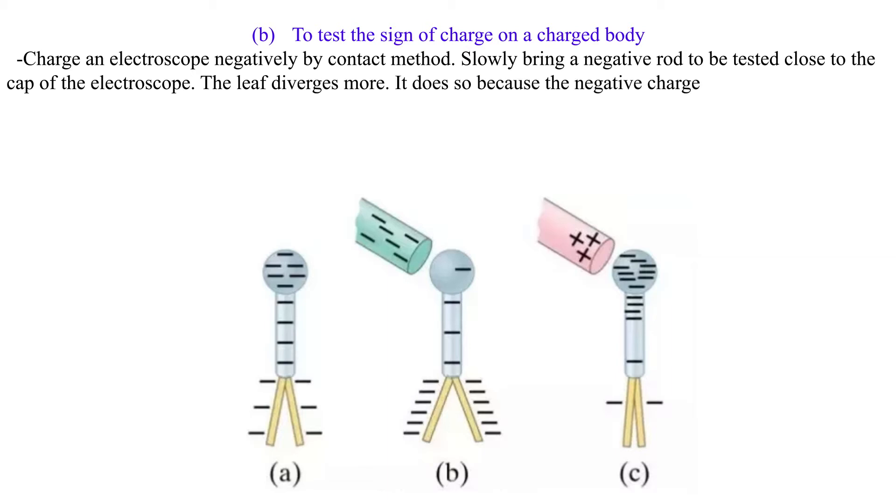It does so because the negative charges on the rod repel more charges from the cap to the plate and the leaf. Similar charges in the plate and the leaf are repelled more.